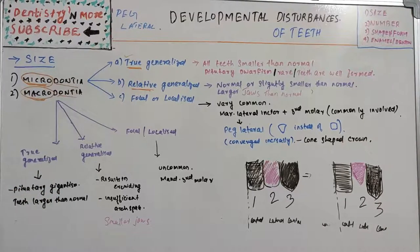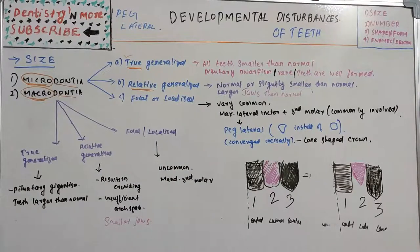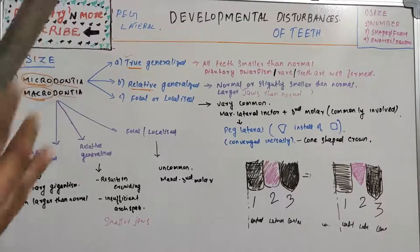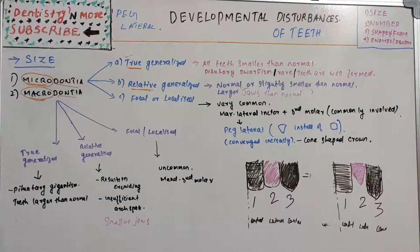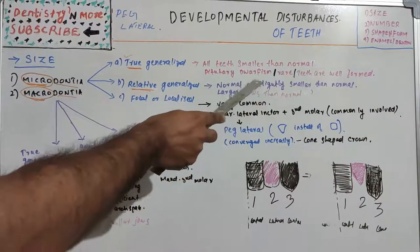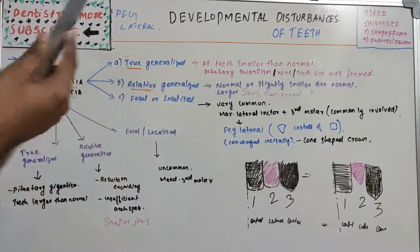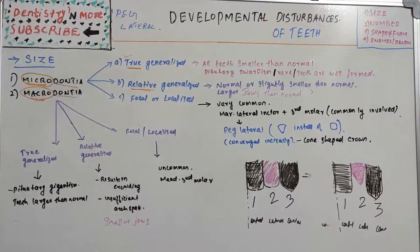The next subtype is relative generalized microdontia. Here, the teeth are normal or only slightly smaller than normal — there is no obvious microdontia. However, the jaws are larger than normal. So when comparing the teeth to a bigger jaw, the teeth appear smaller even though they are actually normal or only slightly smaller. It is the relatively larger jaws that make the teeth appear micro.